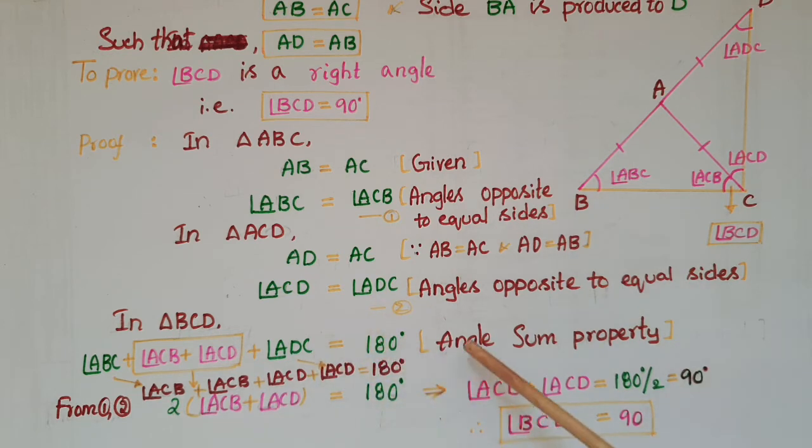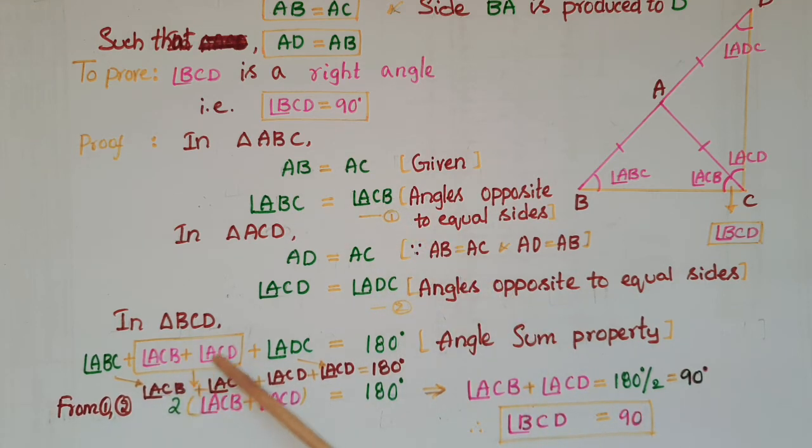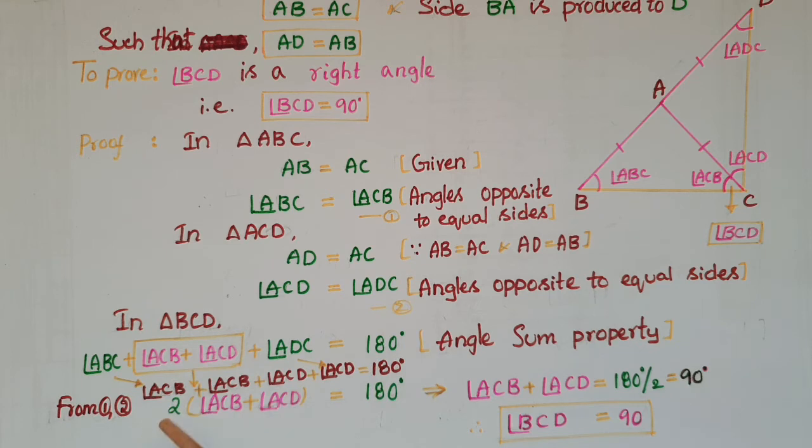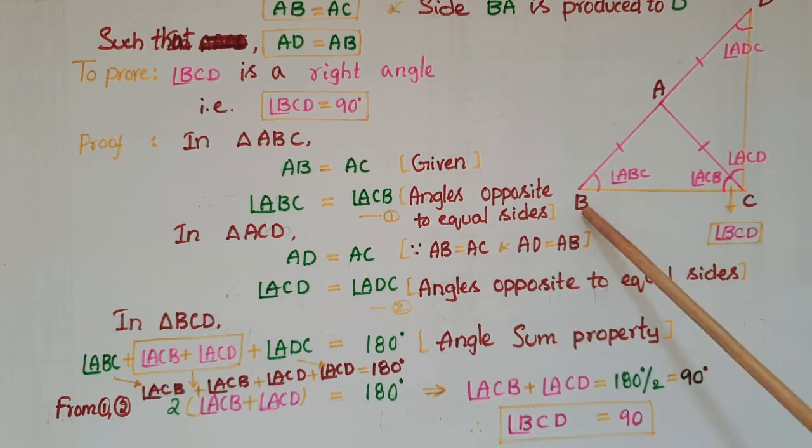We know that angle ABC is equal to angle ACB, and angle ACD is equal to angle ADC. Since angle ACB plus angle ACD equals angle BCD, we get angle BCD is equal to 90 degrees. So angle BCD is a right angle.